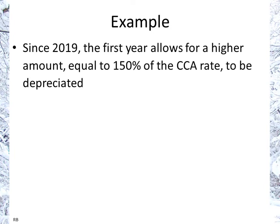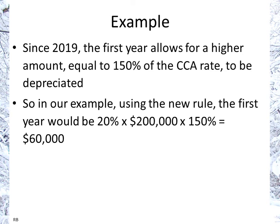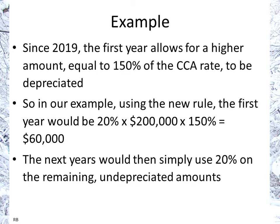Under the new accelerated first-year rule, you can depreciate at one and a half times — 150% — of the CCA rate in the first year only. In our example, the first year would be 20% times $200,000 times 1.5, which equals $60,000 that can be depreciated in the first year. The following years simply use 20% on the remaining undepreciated amounts. After year one, the undepreciated amount is $200,000 minus $60,000, which equals $140,000.